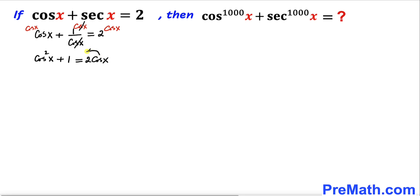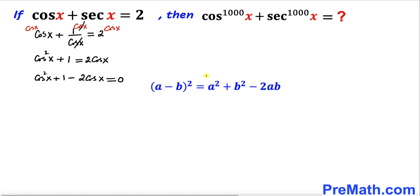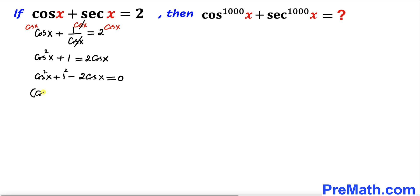Now let's move 2 cosine of x to the other side, giving us cosine squared of x minus 2 cosine of x plus 1 equals 0. Let's recall the identity: a minus b whole square equals a squared plus b squared minus 2ab. This gives us a perfect square, so we can write this as cosine of x minus 1, whole squared, equals 0.